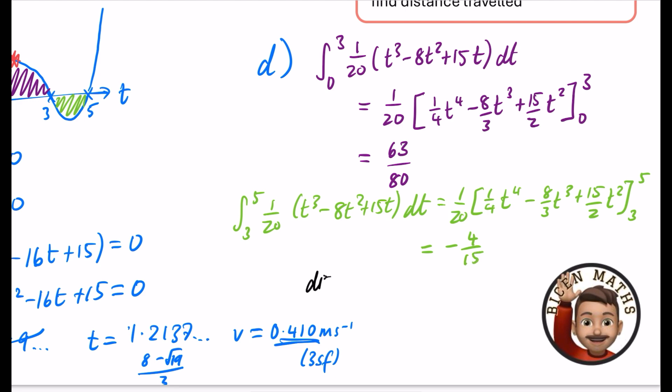This means that the distance traveled is therefore 63/80. We can just ignore the negative sign and add it. So we get 63/80 + 4/15, and that is 253/240, which to three significant figures is 1.05 meters.